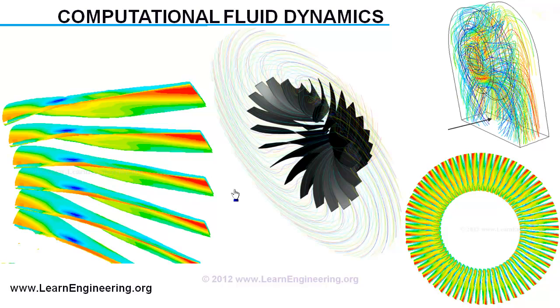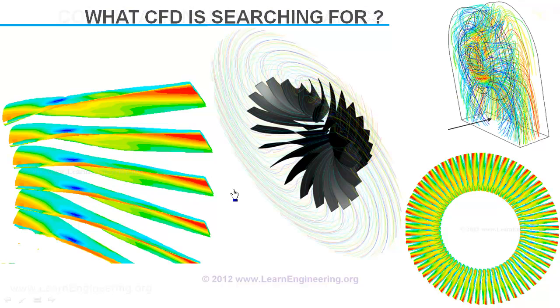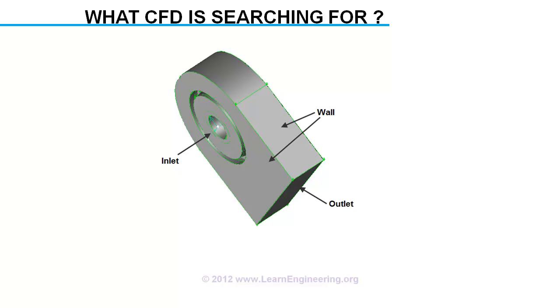The million dollar question. What exactly CFD is searching for? Assume this is the volume where fluid flow occurs, or this is my control volume.